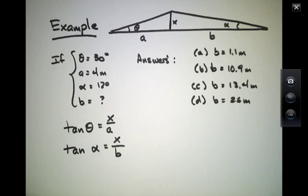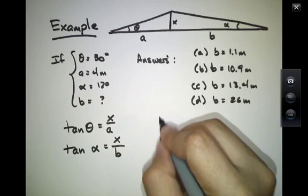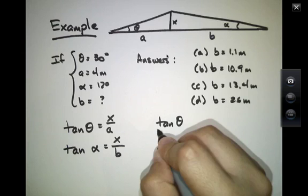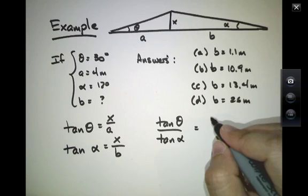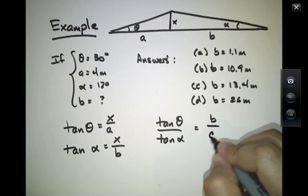If I divide these two expressions, then I have tangent of theta over tangent of alpha is equal to B over A.